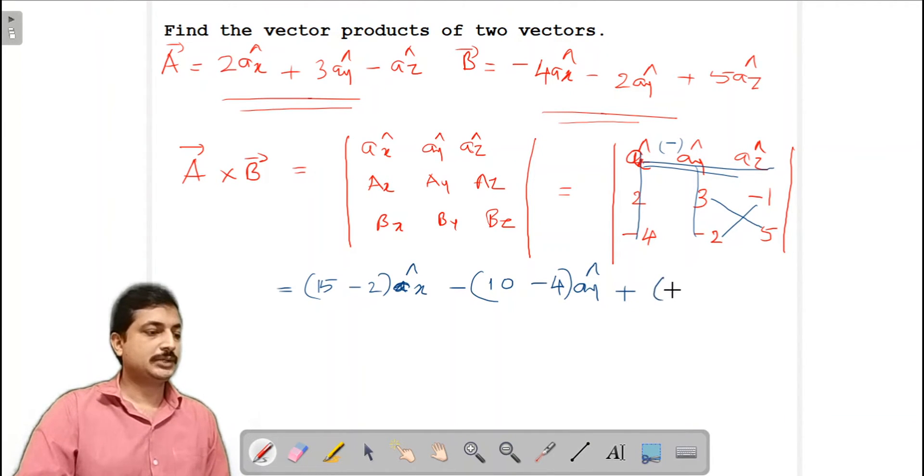Plus, last term, 2 into minus 2 that is minus 4, minus, so plus 12, az. So this will yield you 13, so this is your ax cap minus 6 ay cap plus 8 az cap. So this is your A cross B.